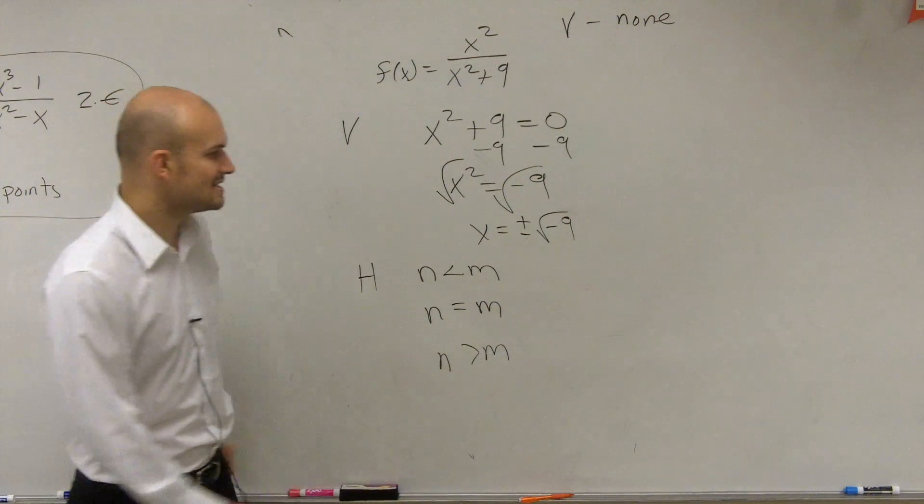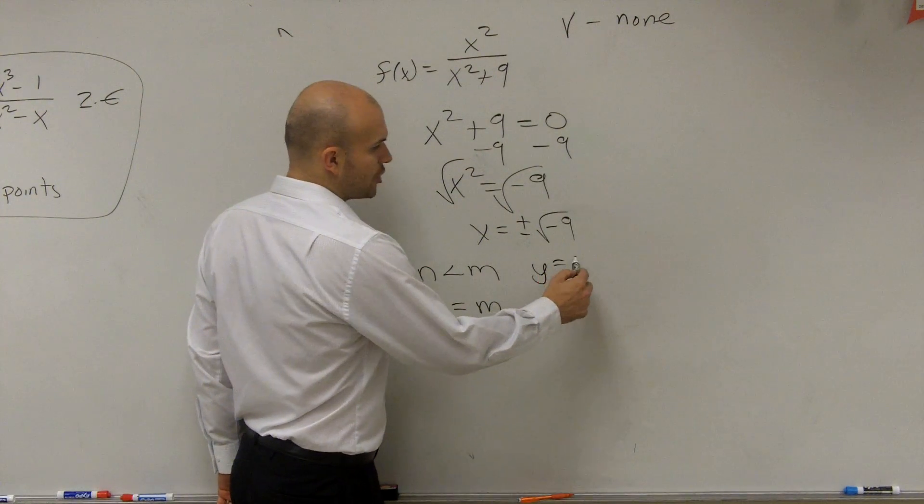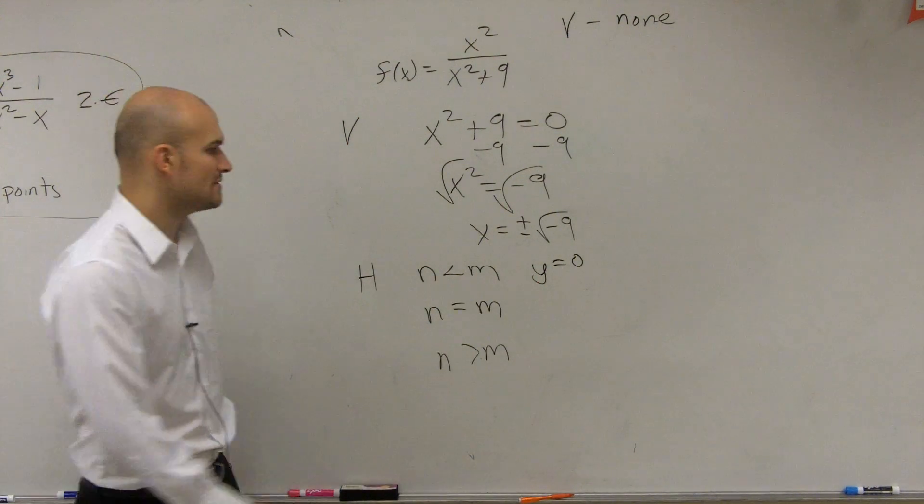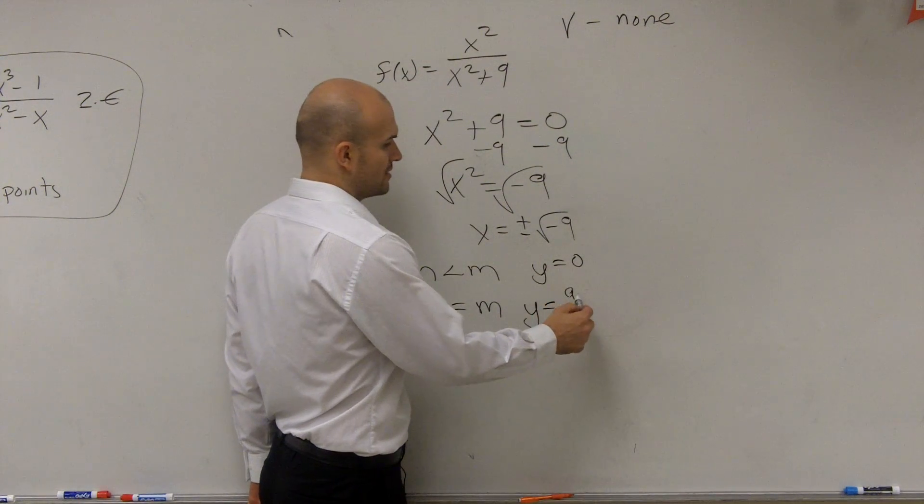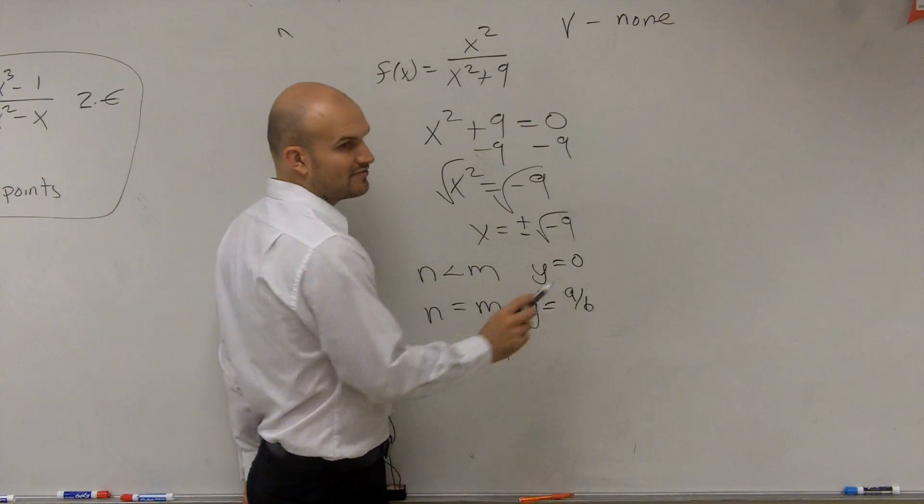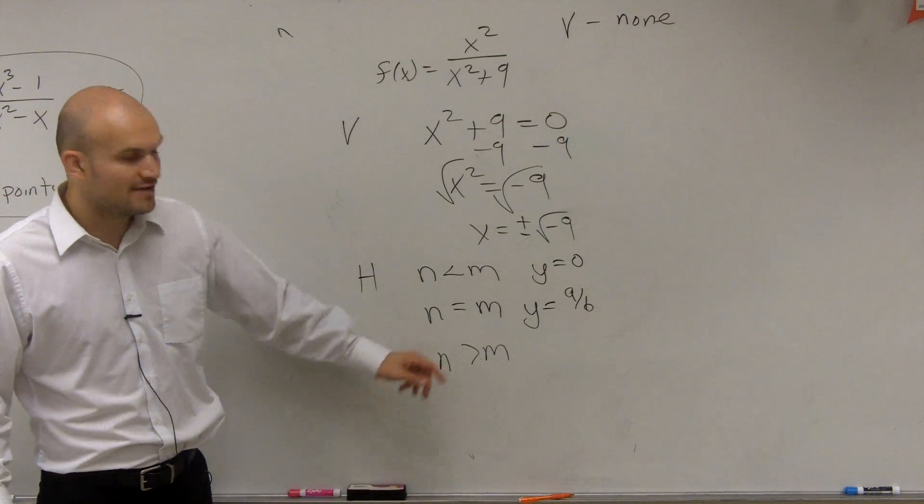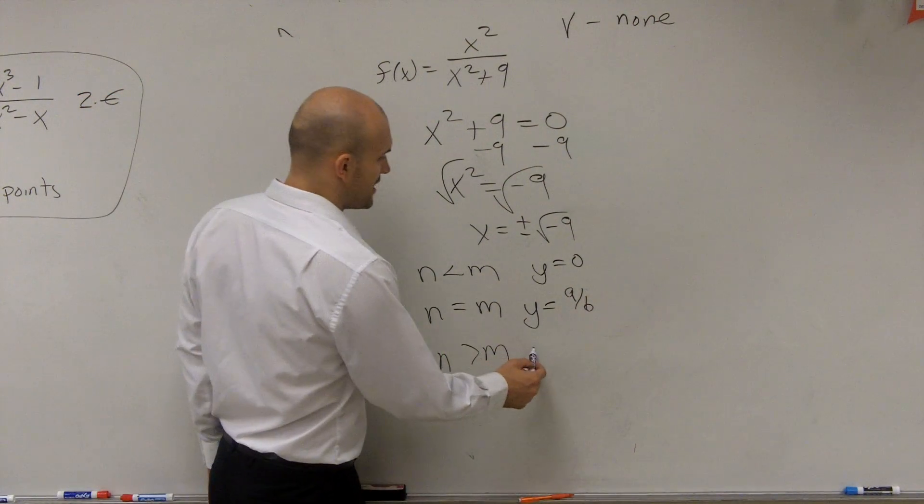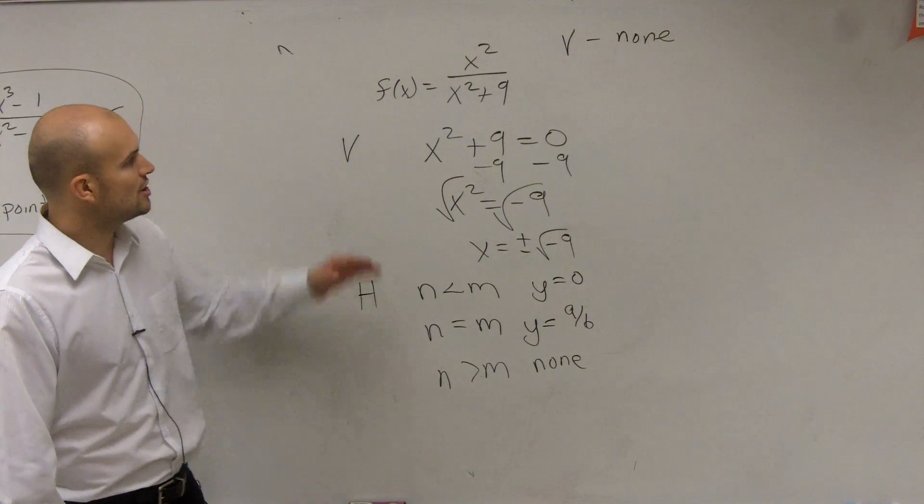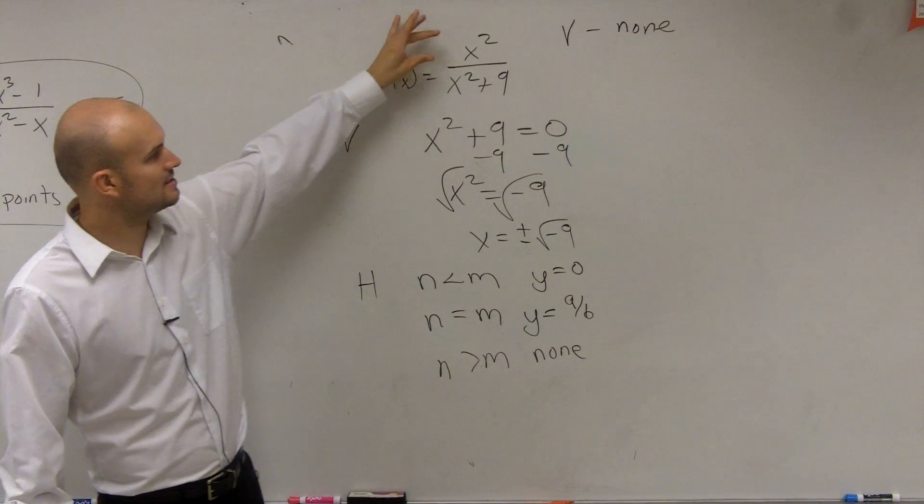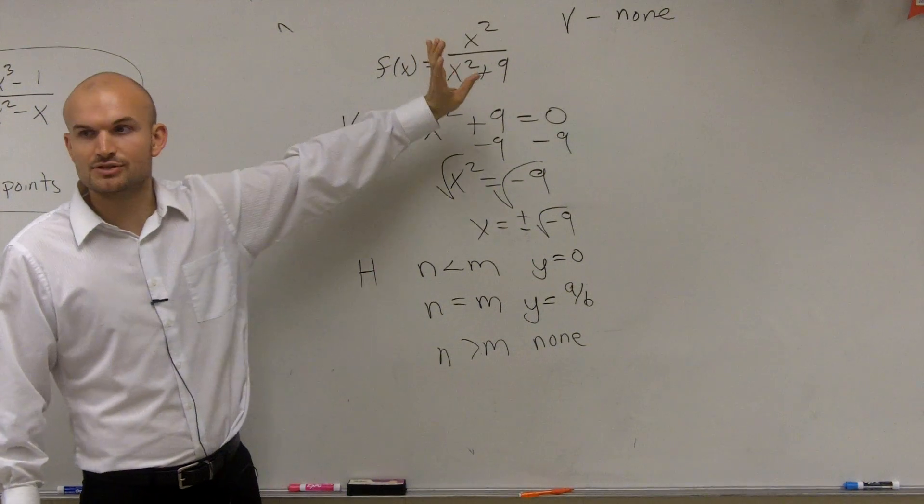So if n is less than m, we have a horizontal asymptote at y equals 0. If n is equal to m, we have a horizontal asymptote of the leading coefficients of your numerator divided by your denominator. And if n is greater than m, we have a horizontal asymptote at nothing. We do not have a horizontal asymptote. So we look at here, and we look at our degrees. The degrees for both polynomials is 2.